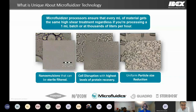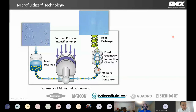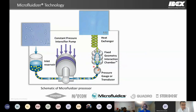The uniqueness of microfluidizer technology is that it ensures every milliliter of material gets the same high-shear treatment, regardless of whether you're processing a few milliliters or thousands of liters per hour. The product enters via the inlet reservoir, is pulled into a constant pressure pumping system, and pushed through a fixed-geometry interaction chamber at pressures up to 30,000 PSI, where it experiences constant high shear rate and impact forces. After passing through the chamber, the product is temperature controlled and collected.